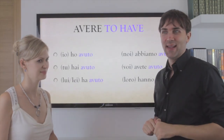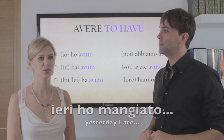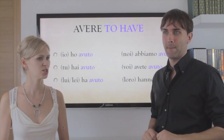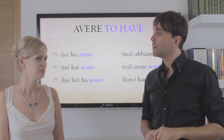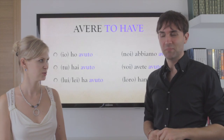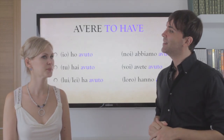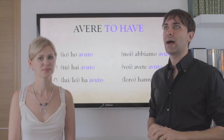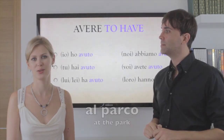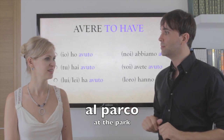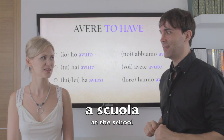Let's practice. Mangiare: cosa hai mangiato ieri? — What did you eat yesterday? Ieri ho mangiato l'insalata. E tu? Ieri ho mangiato il pesce. E loro? Non lo so, non hanno mangiato — they didn't eat. Dove hai lavorato ieri? — Where did you work yesterday? Ieri ho lavorato a casa. Lui ha lavorato al parco. Tu hai lavorato a scuola.